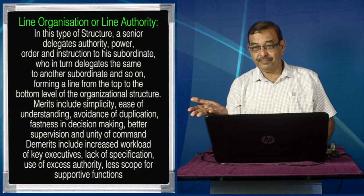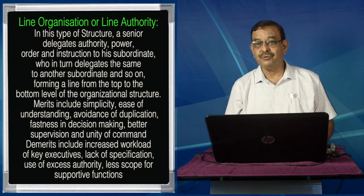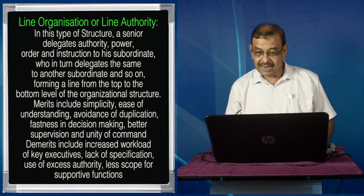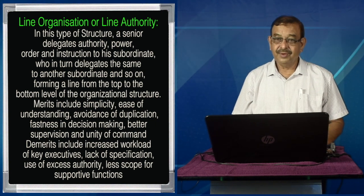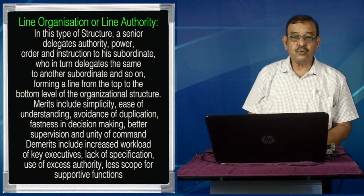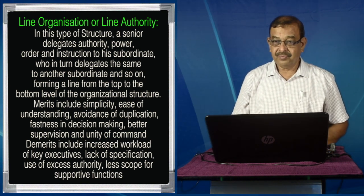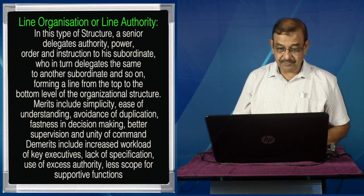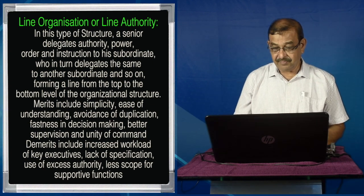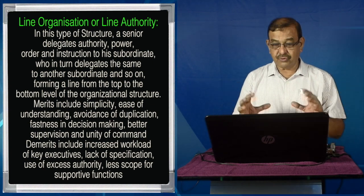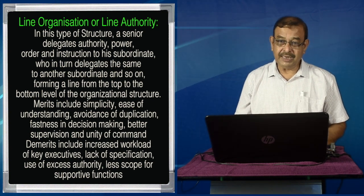What are the merits? If there is a chain of command, it is simple and likely to work out — it is easy to understand. There is no scope for duplication; each person will handle only their earmarked responsibilities. There will be fast decision making, better supervision, and unity of command. These are all good things.